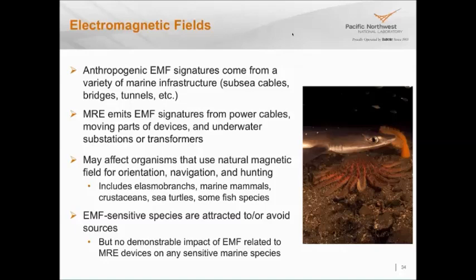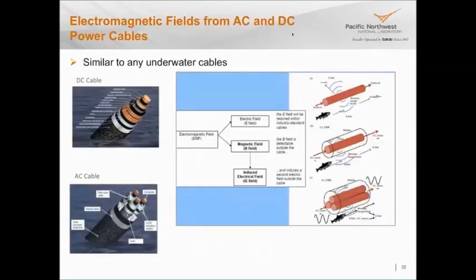At the moment, we know some EMF-sensitive species can be attracted or they may avoid sources. Currently we're not seeing any actual harm, which is of course very hard to wrestle to the ground. This slide reminds you that cables putting out EMF come in many shapes and sizes, and whether they're alternating current or direct current really affects what kind of signal they put out. We have modified some models from looking at EMF in air and soil, and although modifications are needed, we do have a fair sense of this.